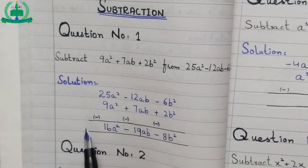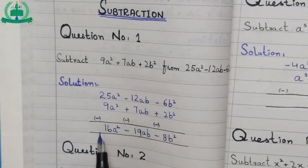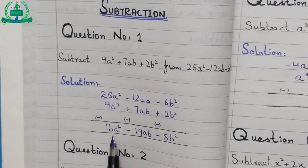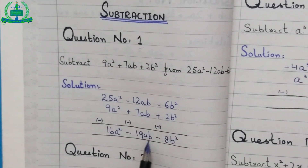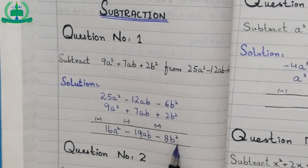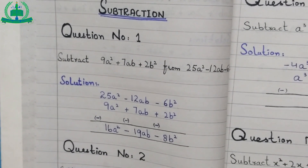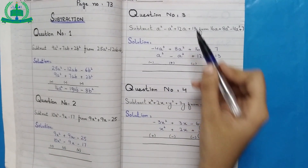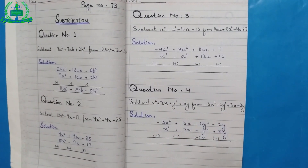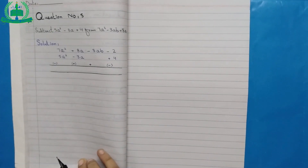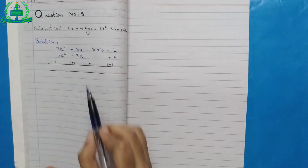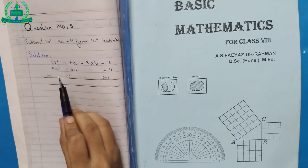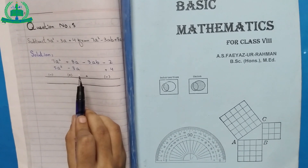The larger digit is 25 and it has a plus sign. So if there is a plus sign at the beginning of the equation, we do not write it. The final answer is 16a square minus 19ab minus 8b square. Do question number 2, question number 3, question number 4, and question number 5 by yourself. This is the end of today's lecture. Complete your work on time. Allah Hafiz, thank you.